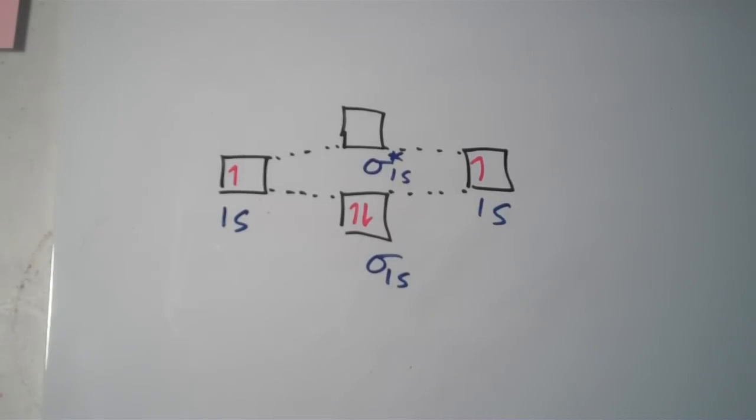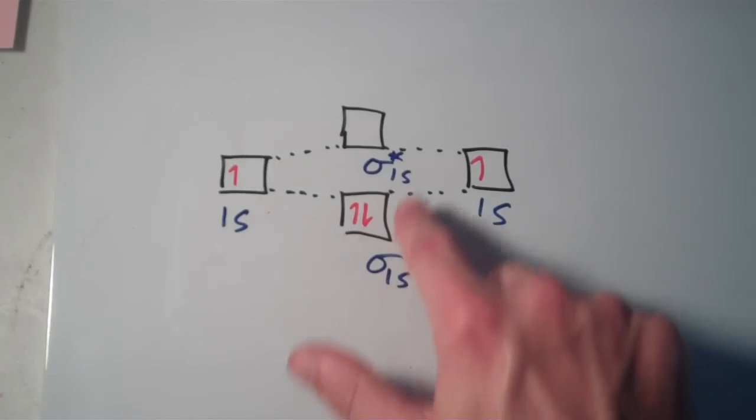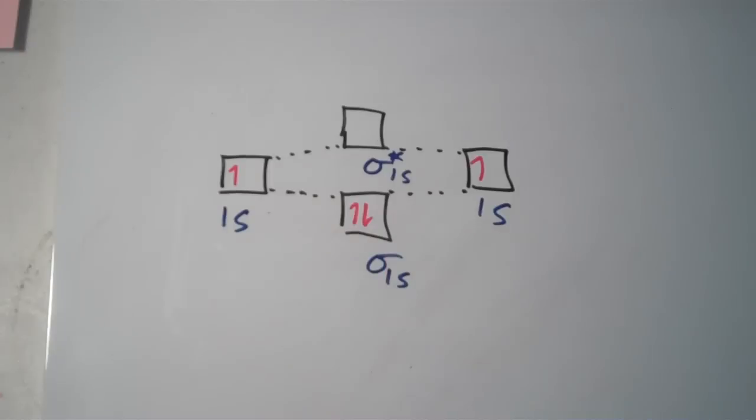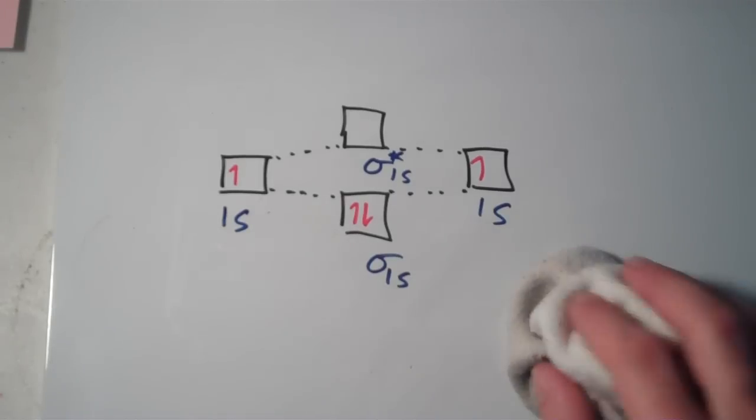To me, it looks like it would be diamagnetic because I don't see any unpaired electrons. They're all paired. There's only two of them and they're in a pair. So H2 is diamagnetic and would therefore be repelled by a magnetic field, not attracted to it. Now let's go over the O2 molecule.